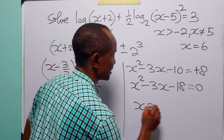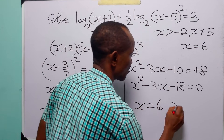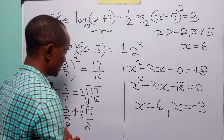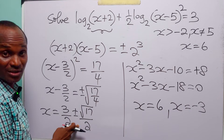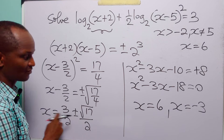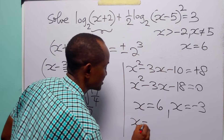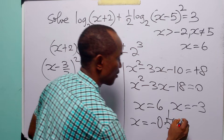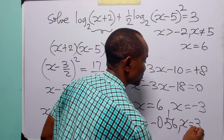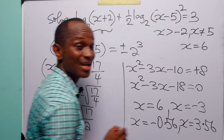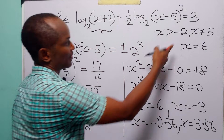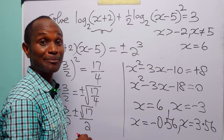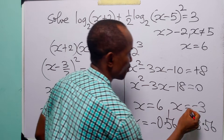From the second equation we have x equals 6 or x equals minus 3. Using a calculator, from the first equation we can approximate the values as x approximately equals 3.56 or x approximately equals minus 0.56.